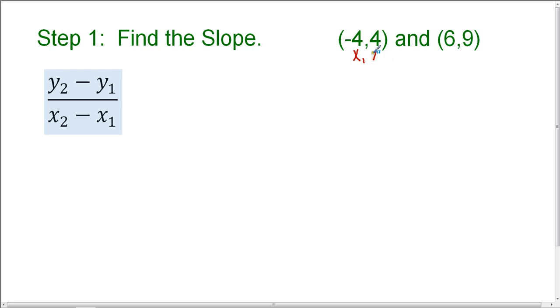So I'll label it x sub 1, y sub 1. And this is my second point, which will be x sub 2, y sub 2. And I'm going to go ahead and substitute into this formula in order to find the slope. So y sub 2 is 9, and y sub 1 is 4. X sub 2 is 6, and x sub 1 is negative 4.